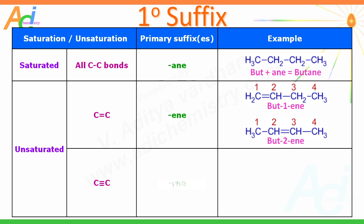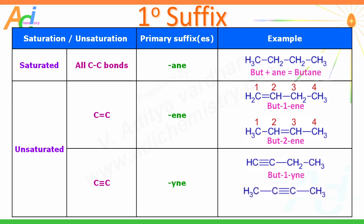For a triple bond between carbon atoms, the primary suffix is '-yne'. Therefore, a molecule with a triple bond at C1 is 'but-1-yne', and one with a triple bond at C2 is 'but-2-yne'.